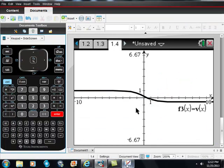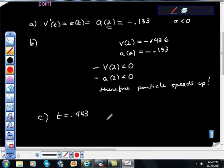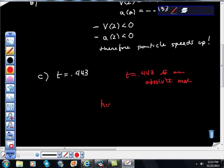So, go back to our problem. Go back to our problem here. And t equals 0.443 is an absolute max. Highest point at t equals 0.443.